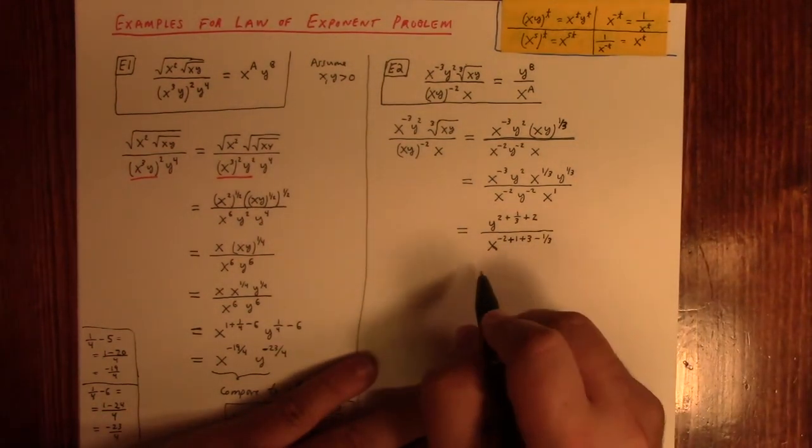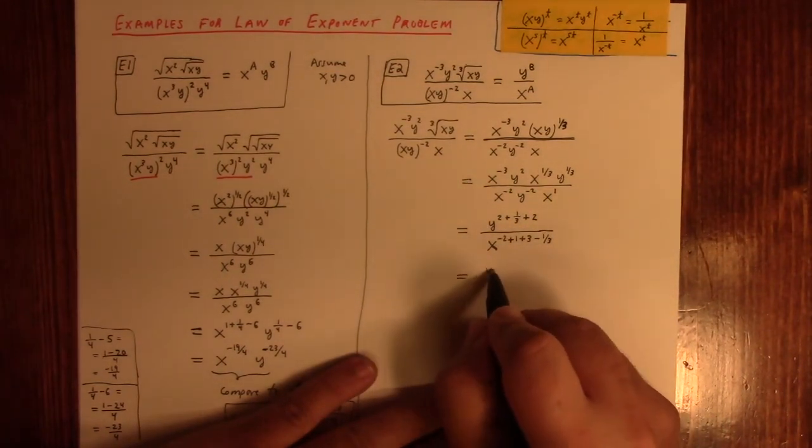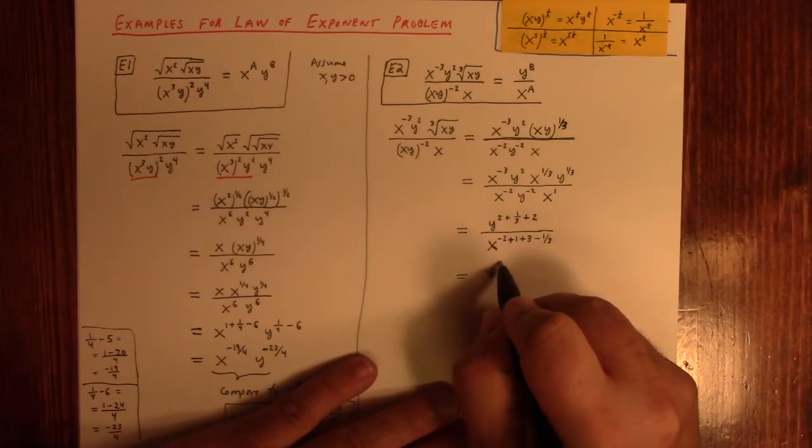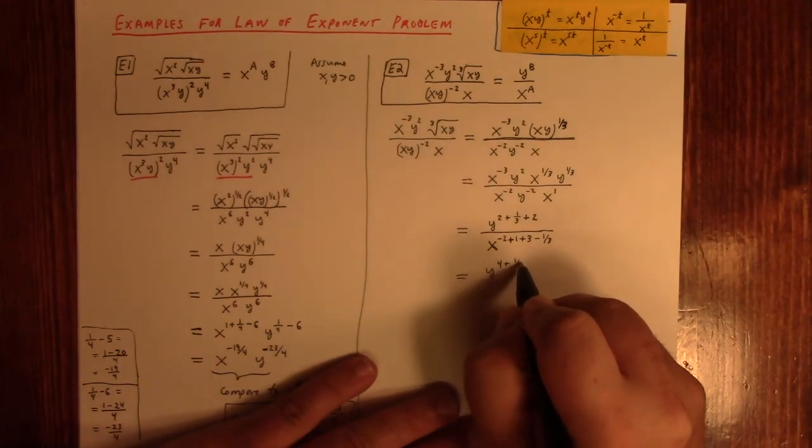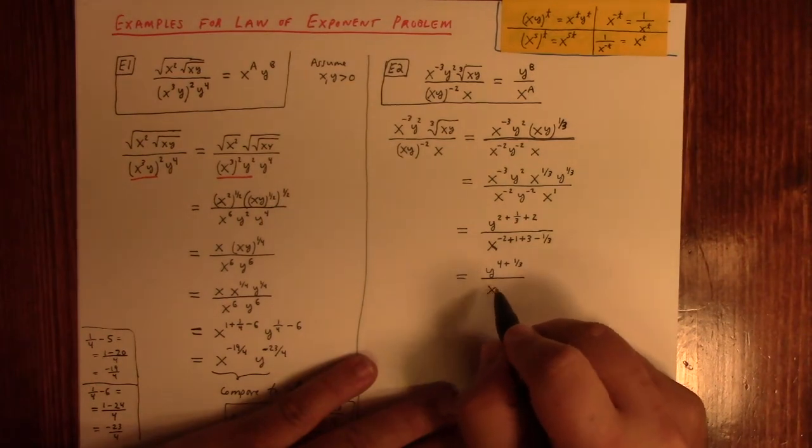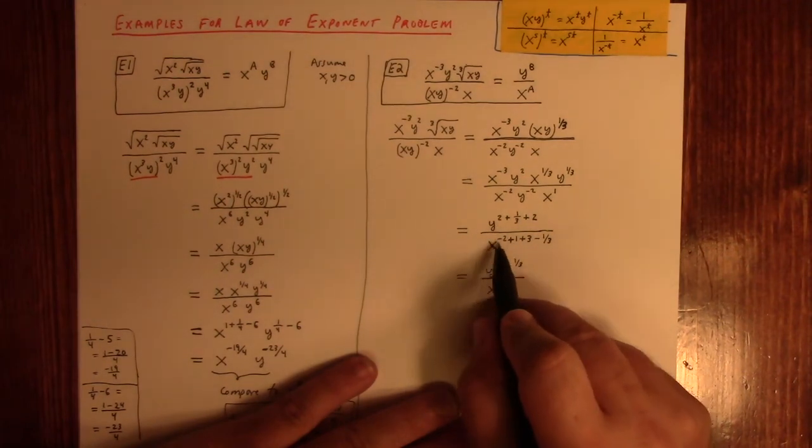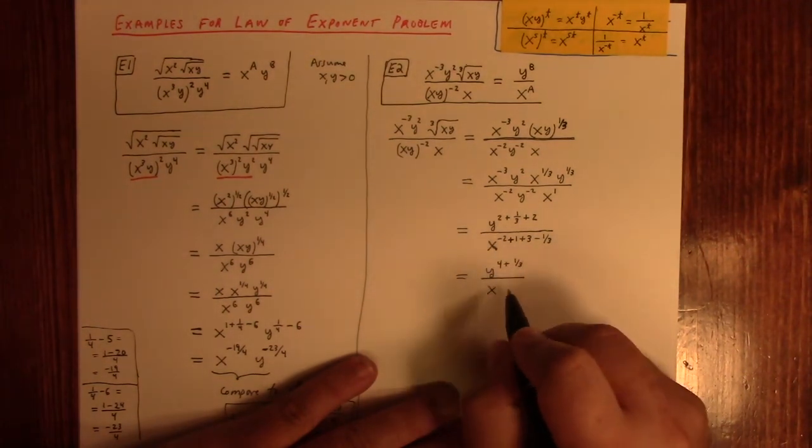So, let's see if I can clean that up. So, I have y to the 4 plus 1 third divided by x to the, what do we got? 4 minus 2. Anyway, the whole numbers work out to 2. And, we've got 2 minus 1 third.